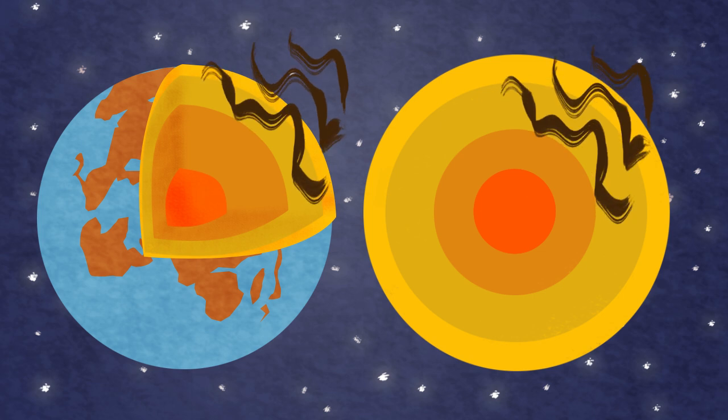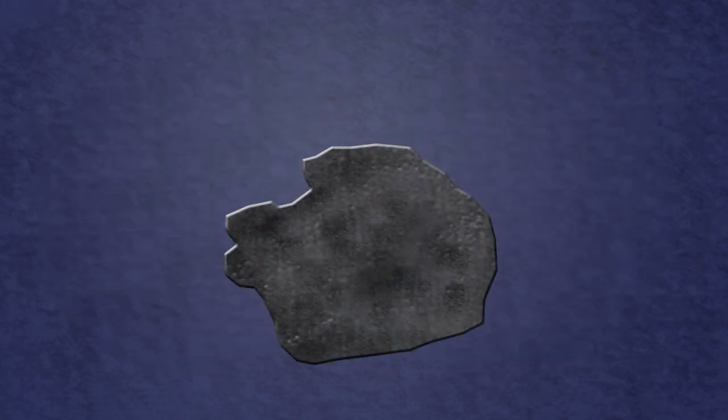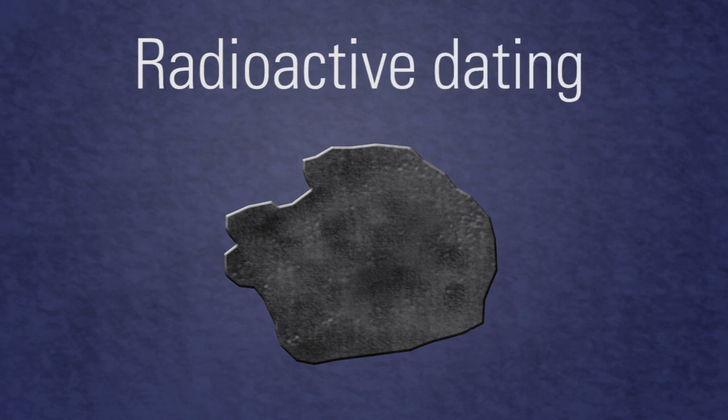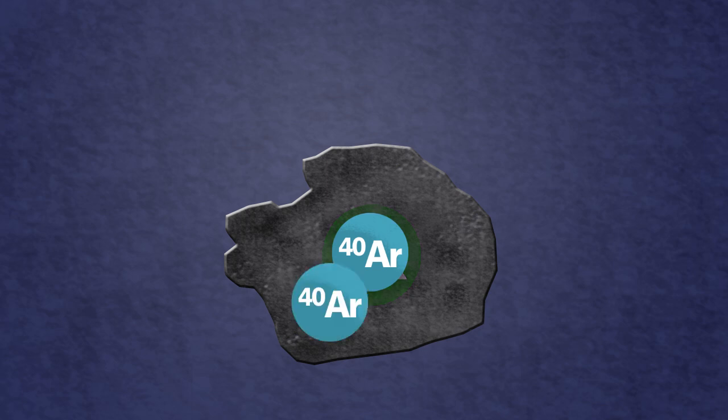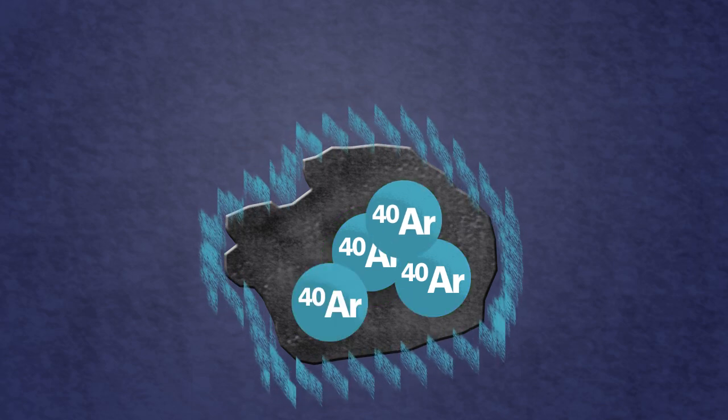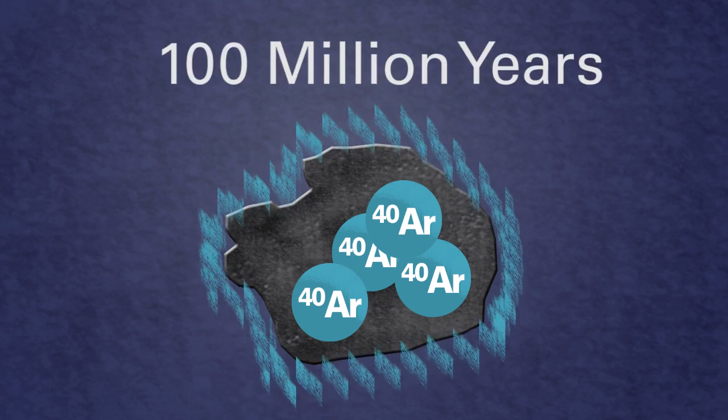The age of rocks is determined mainly through radioactive dating. When a radioactive element, such as potassium-40, undergoes radioactive decay, a decay product is formed, in this case argon-40, which builds up in the rock once the rock solidifies. Using the half-life of the element, in this case 100 million years, we can estimate the age when the rock solidified by how much decay product there is compared with the amount of starting element.